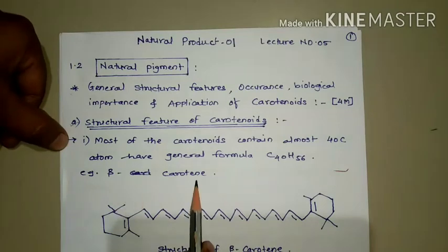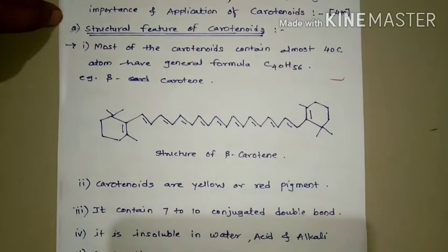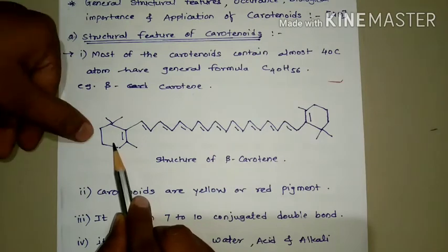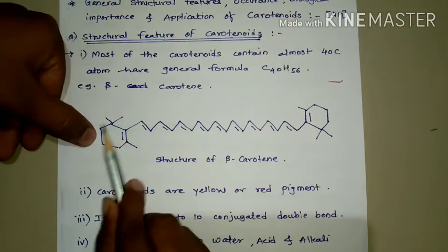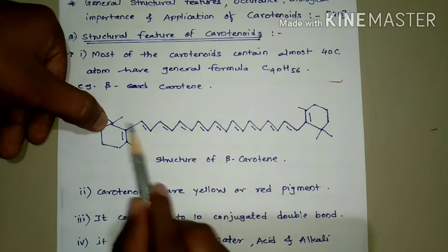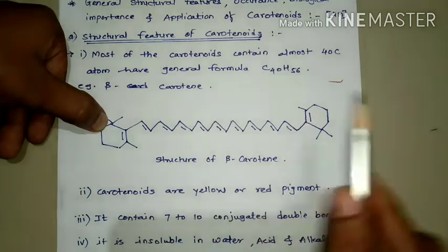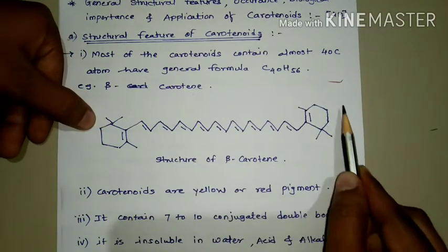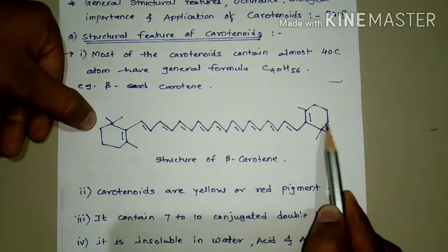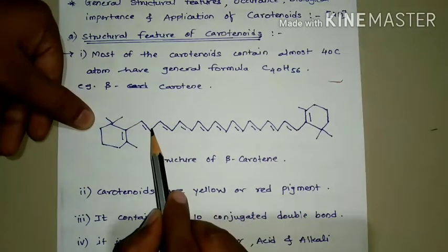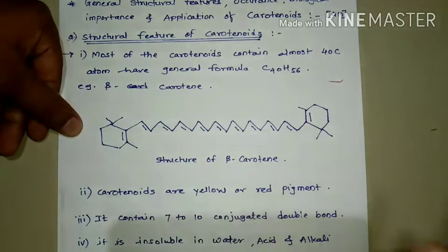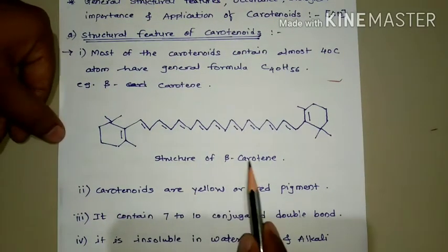An example of carotenoids is beta-carotene. In the structure of beta-carotene, at each tail there is a six-membered cyclic ring containing double bonds and two substituents. At the third position there is one methyl group. At the other tail, the same ring and substituents are present. In between the two cyclic rings, conjugation takes place — conjugation means alternating single and double bonds. This conjugation is present in the beta-carotene structure.